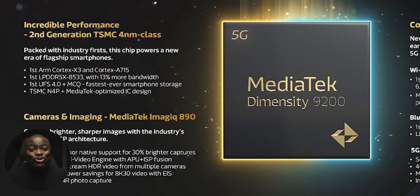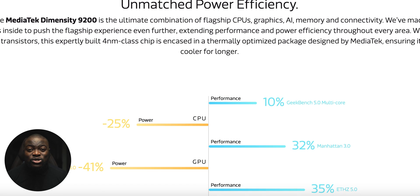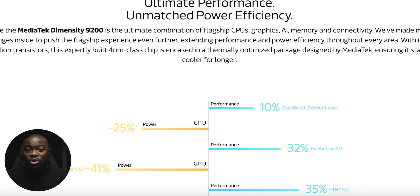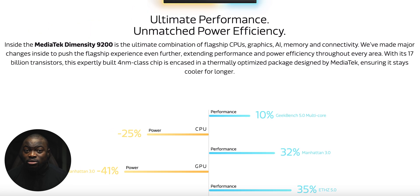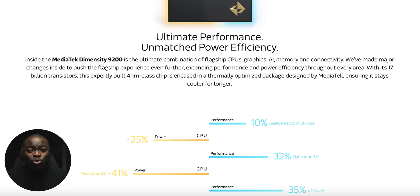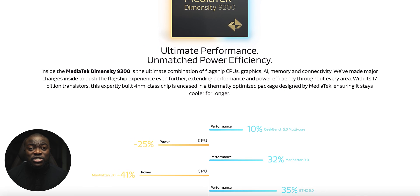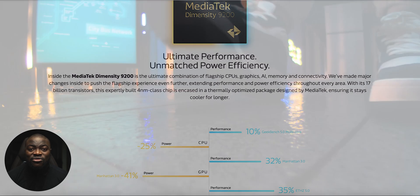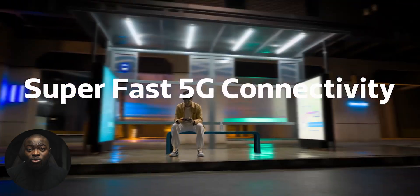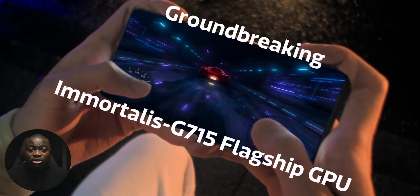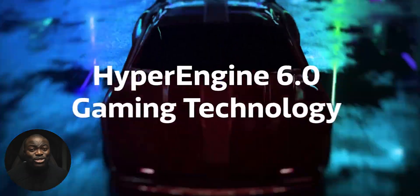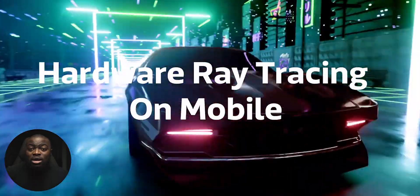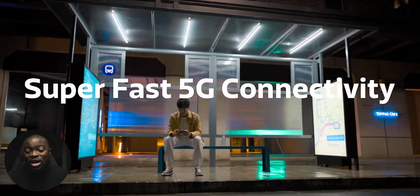MediaTek are claiming up to 12% faster CPU performance with 25% less power draw, and 32% faster GPU performance with 41% less power draw. The Immortalis G715 is powering the graphics performance with features like hardware-based ray tracing and VRS, so for gamers things are looking really nice with the optimizations that MediaTek have with the HyperEngine 6.0. Bear in mind, this is all compared to their previous chipset, the Dimensity 9000.